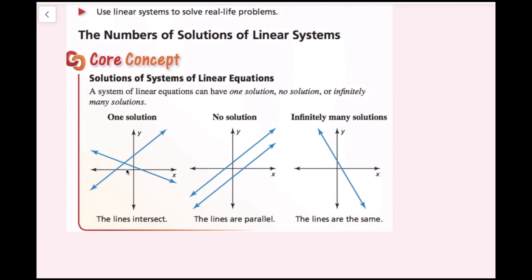If there's one solution, which is everything we've done so far, that's when the lines intersect on a graph. No solutions is if the lines are parallel — they will not intersect on a graph ever. Infinitely many solutions is if the lines are the same, meaning we actually have two lines on top of each other, and every single point on that line will be a solution.